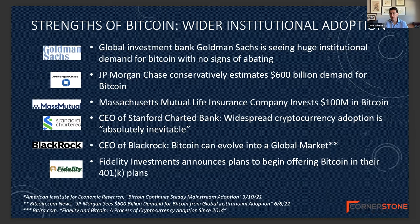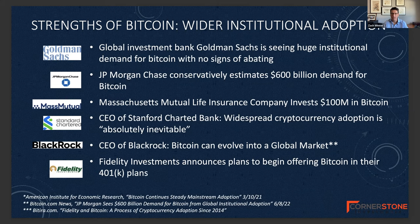One of the other great strengths of Bitcoin is its wide institutional adoption. Goldman Sachs has said that it sees huge institutional demand for Bitcoin with no signs of it abating. JPMorgan Chase recently conservatively estimated the current demand is about $600 billion. And you're seeing more and more hedge funds, pension funds, and life insurance companies invest in it.